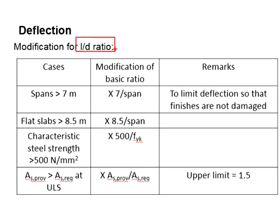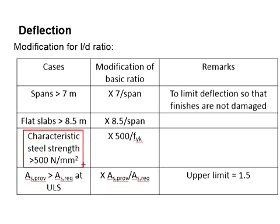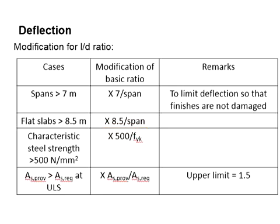The calculated L/D ratio may be modified under certain circumstances. When the member span is more than 7m, the L/D is multiplied by 7 divided by the span. For a flat slab when the span is more than 8.5m, it is multiplied by 8.5 divided by the span. When the characteristic strength fyk is greater than 500 N/mm², multiply by 500 divided by fyk. When the provided area of steel is greater than the required area at the ultimate limit state, multiply by As-provided divided by As-required, limited to a maximum of 1.5.